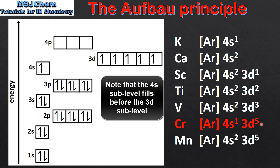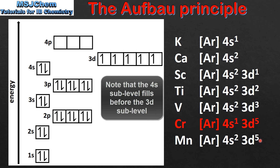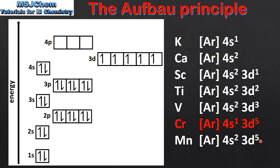Next is chromium, which is one of the exceptions to the Aufbau principle. Its electron configuration is 4s1, 3d5. And finally we have manganese which is 4s2, 3d5.